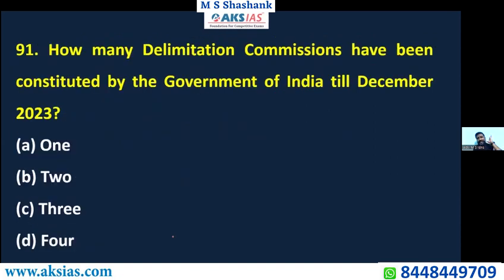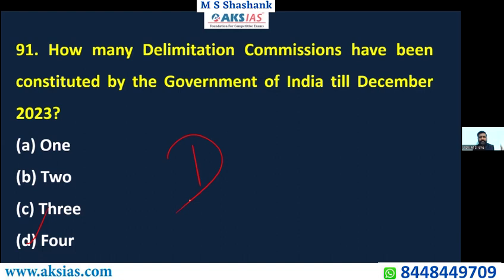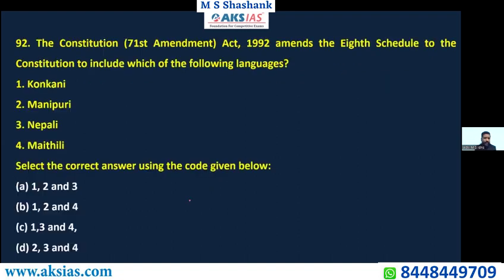How many delimitation commissions have been set up? After the 1951 census we had one, after the 1961 census we had one, after the 1971 census we had one, and after the 2001 census we had one in 2003. So the Parliament has set up a delimitation commission four times. Article 82 deals with delimitation. The answer is four — a pretty straight one.